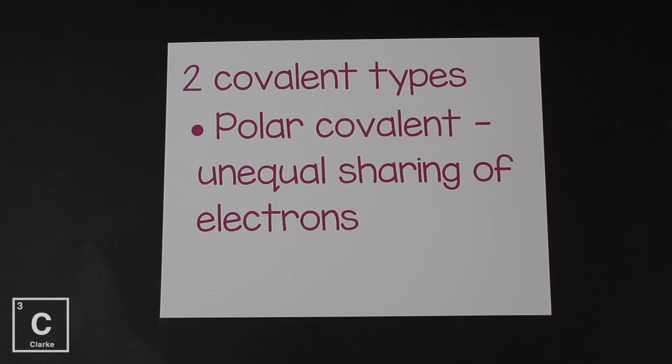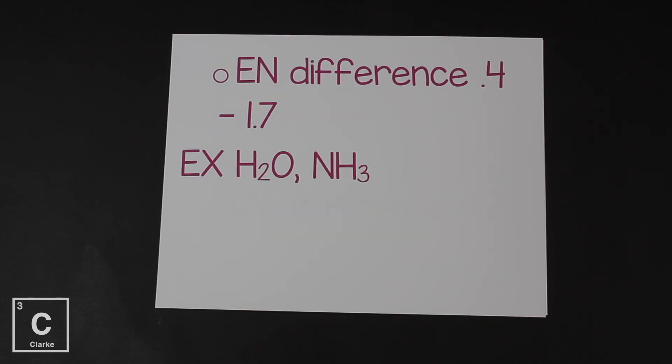That's like a polar covalent bond. And if we were to get those two elements that make a polar covalent bond and look at an electronegativity chart and subtract those numbers, the difference would be somewhere between 1.7 and 0.4. That would tell us you have a polar covalent bond.